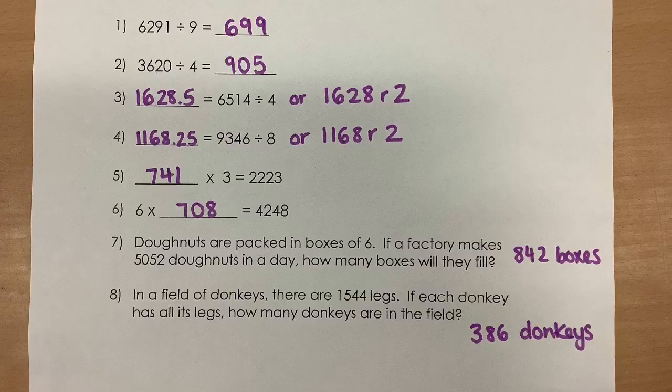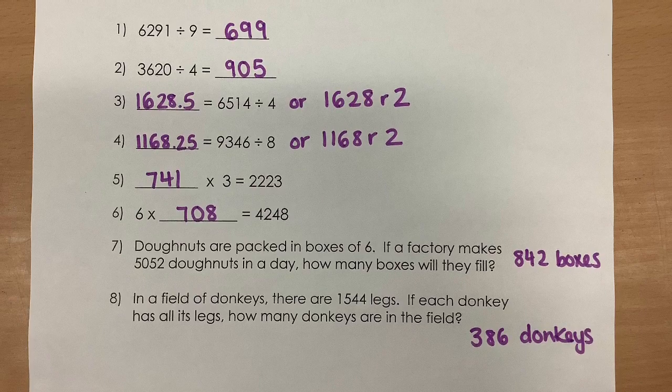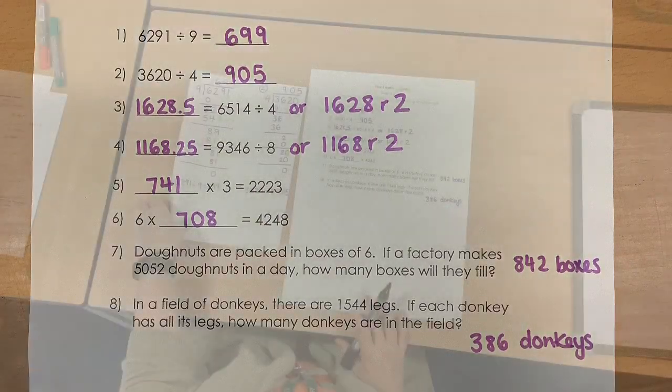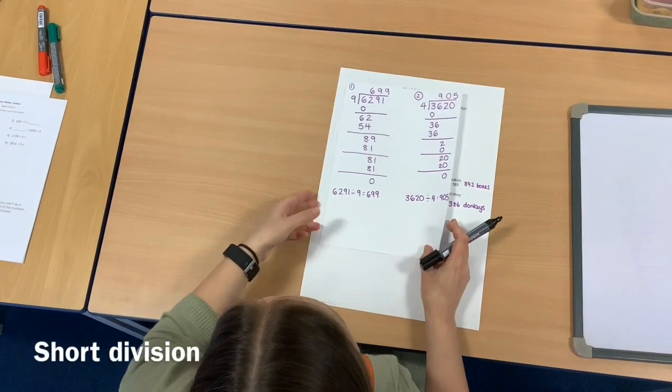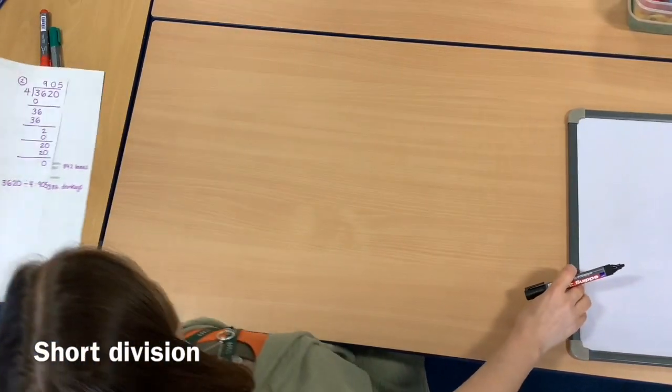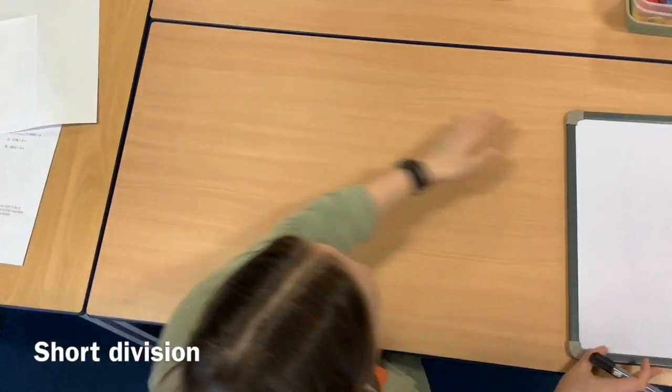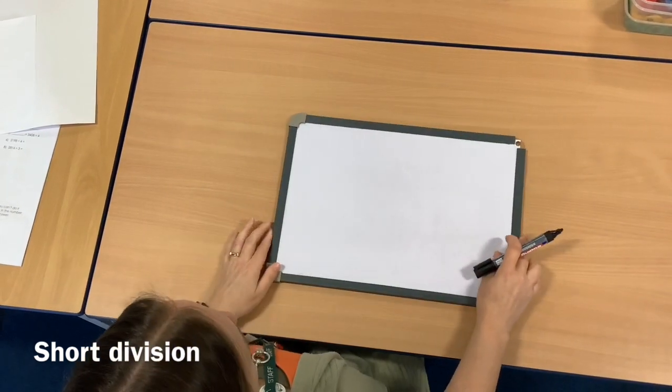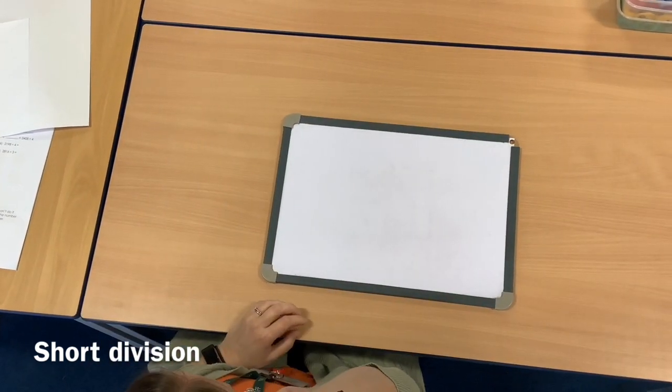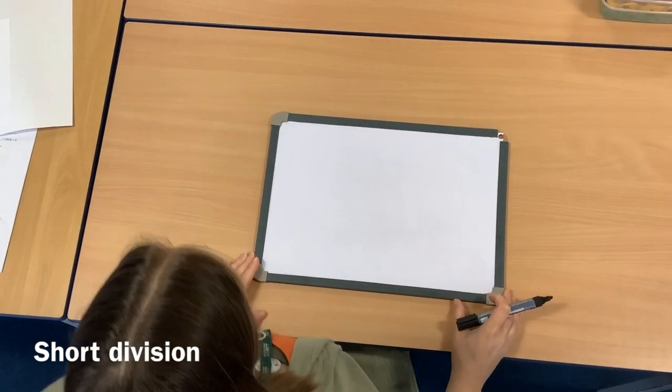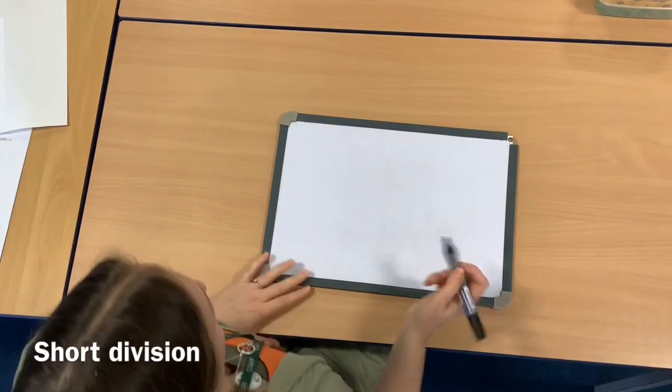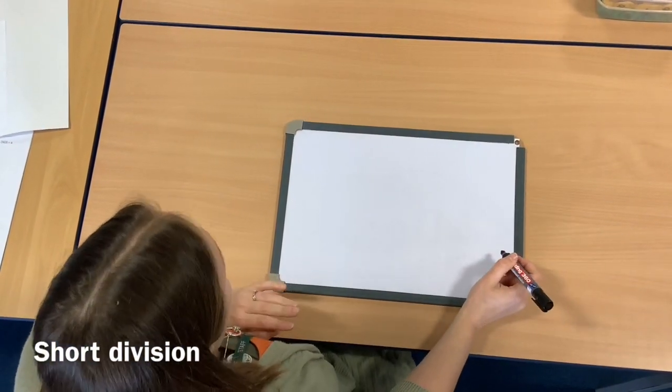We're now going to be moving on to how we might make that a little bit more efficient, and we're going to use a short division method. In essence, it's exactly the same, but we just don't write so much down. I'm going to show you an example, and then we'll do a couple more examples, and then you'll have some to practice.